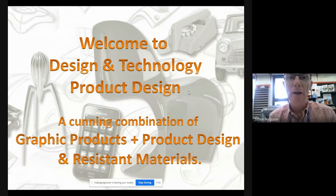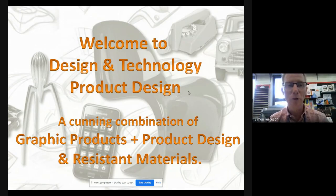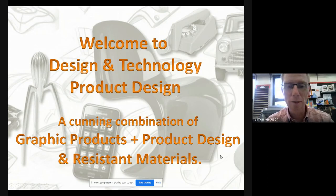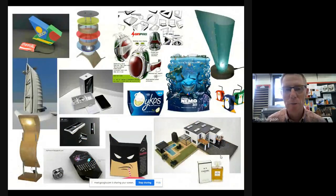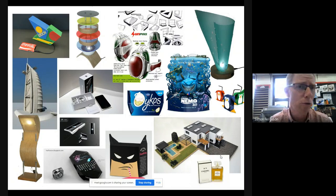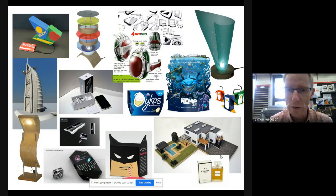Welcome to Design and Technology. We like to call this a cunning combination of graphic products — some of you may have studied paper and board — product design, and also resistant materials, or just the materials elements of your GCSE Design and Technology. We bring all three elements together and study product design in quite a broad delivery. These are typically some exemplar work — everything from architectural design, designing the built environment, promotional stands, advertising, small products and their packaging.